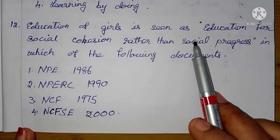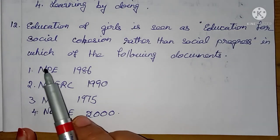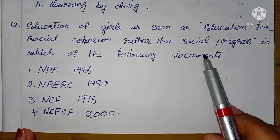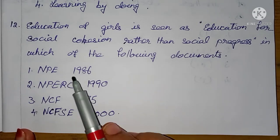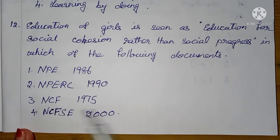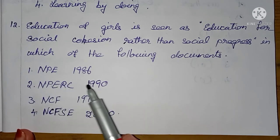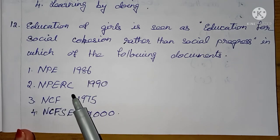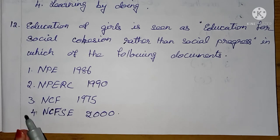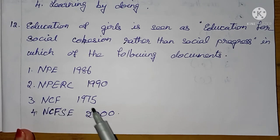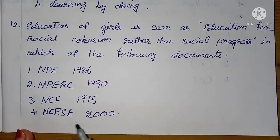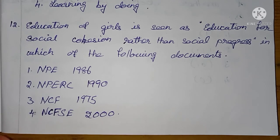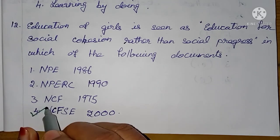Education of girls is seen as education for social cohesion rather than social progress — in which of the following documents? 1. NPE 1986, 2. NPE RC 1990, 3. NCF 1975, 4. NCFSE 2000. The right answer is option 4: NCFSE 2000.